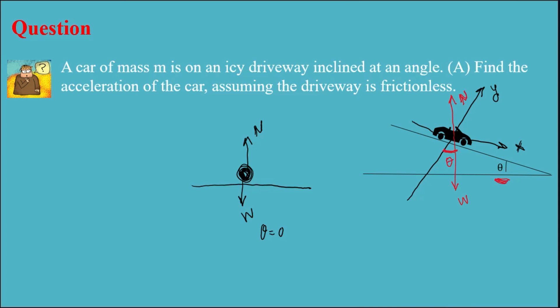The rest would be the same as if theta were equal to 0, so it's going to be a similar problem to what I've solved in previous videos. Based on Newton's second law, the total force is the sum of forces. The force in the Y axis is going to be the normal force minus W, and it's going to be 0 because there is no movement in the Y axis. My W here has a component Mg cosine theta in the Y direction, and another component Mg sine theta in the X direction.